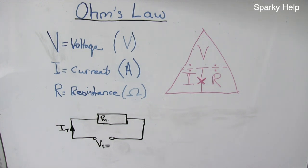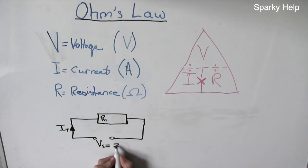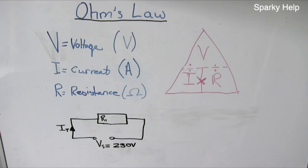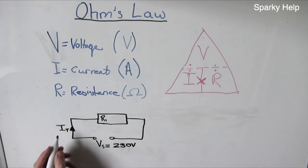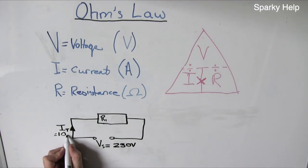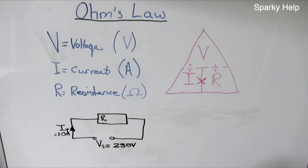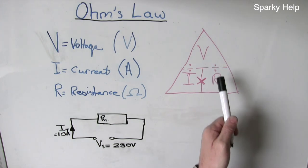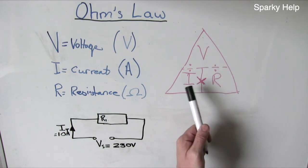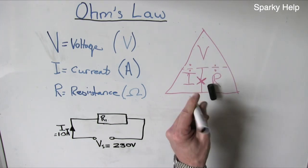Let's do the same again, with different values. So let's give the voltage 230V, which is our standard supply voltage. Let's make our current 10A. We know 2 values, so using our formula we need to calculate what the resistance would be.